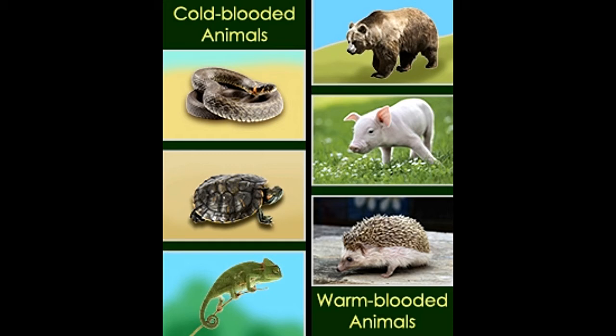Thermoregulation is the property by which an organism regulates its body temperature in accordance with that of the surrounding environment. Animals are grouped into two categories depending on the type of thermoregulation exhibited by them.